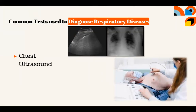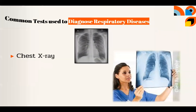Chest ultrasound. This is a test in which the doctor takes an image of the internal organs in your chest through sound waves. Through this imaging, the doctor can see the condition of your lungs. Chest x-ray. This is also an imaging test using radiation. This can detect abnormalities inside your lungs or the bones surrounding it.